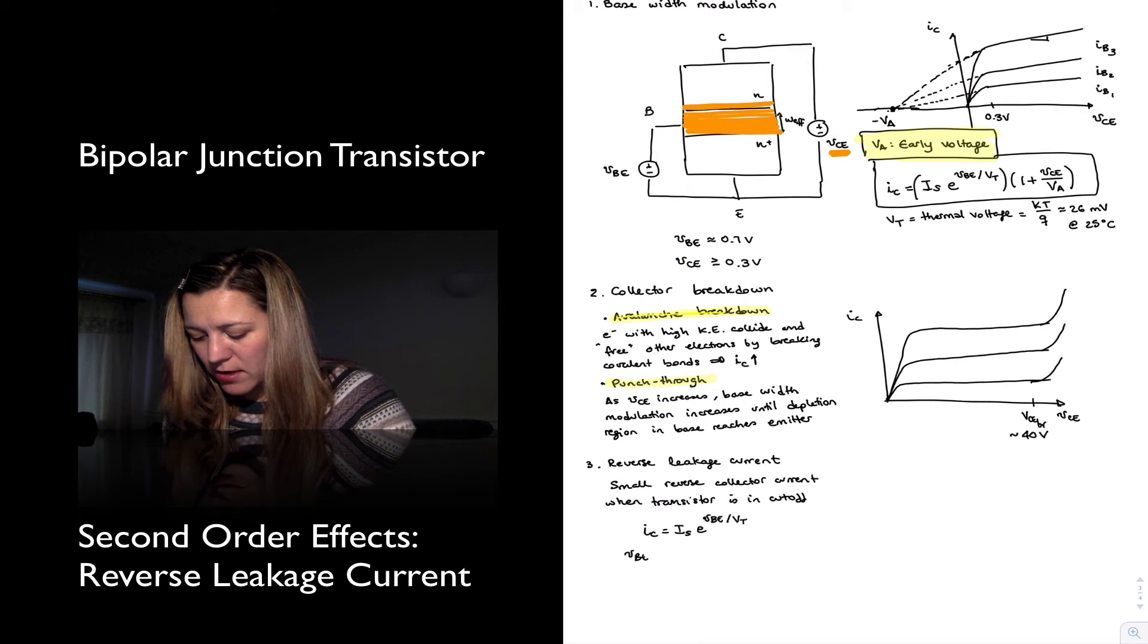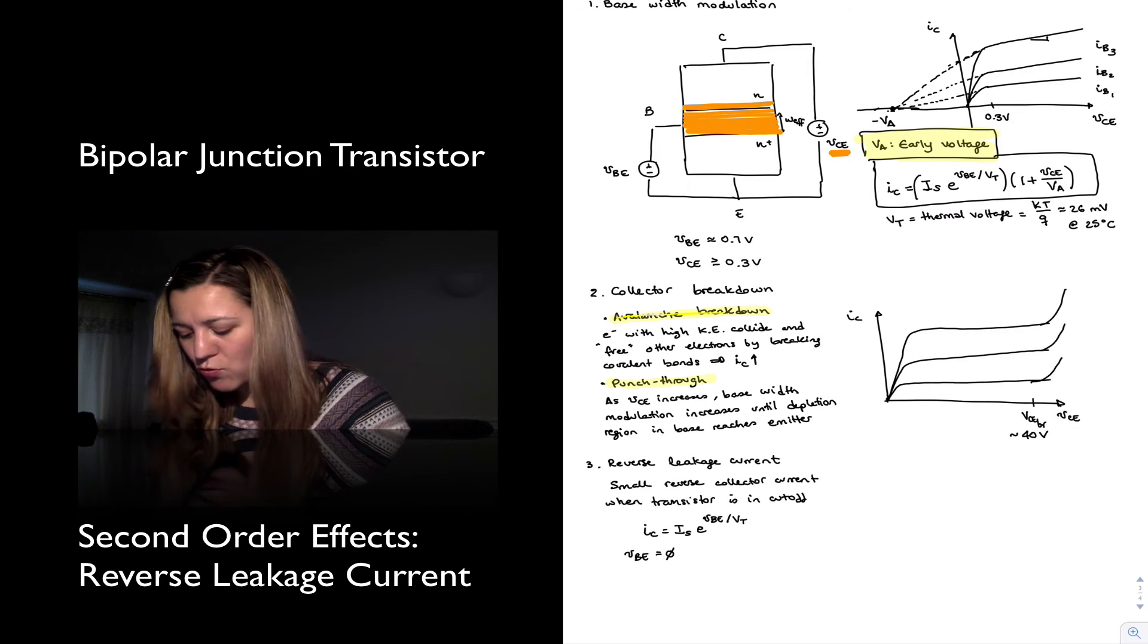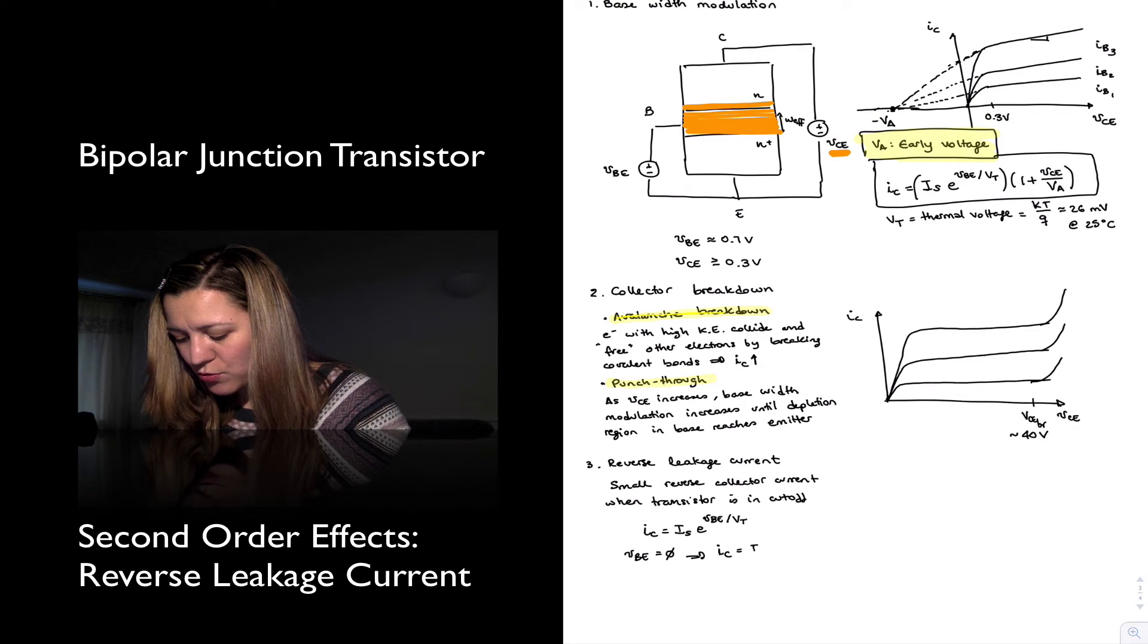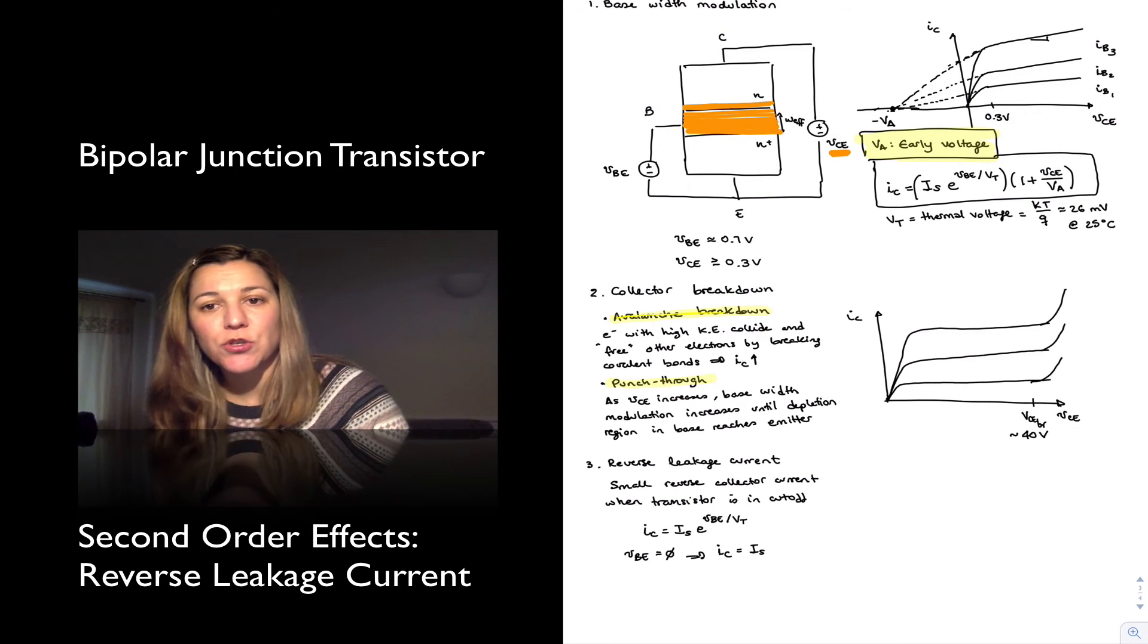Again, if we make VBE equal to zero, then e to the zero is equal to one, and therefore IC becomes equal to IS, that small saturation current.